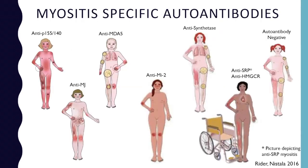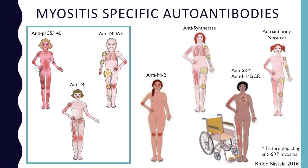These are the main myositis-specific autoantibodies that we see in kids with myositis. The three most common ones are the ones in the box: anti-P155-140, anti-MJ, and anti-MDA5. The other ones occur in kids with myositis too, but are much less common. As you can see from the pictures, they all go along with different clinical features, and most of the time these kids have features of disease that can be grouped together based on their autoantibody — helping us understand what their disease might look like.